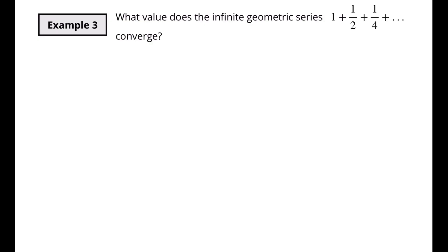We've got one more example. This one says: what value does the infinite geometric series 1 plus 1 half plus 1 fourth converge to? We've got some new terminology here. An infinite geometric series means that n is going to approach infinity — you keep adding more and more terms all the way to infinity.